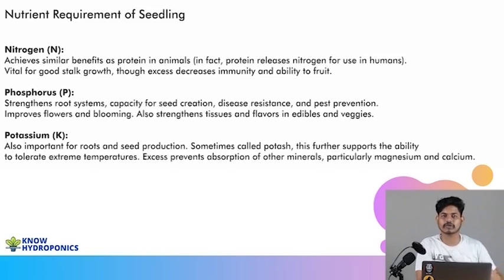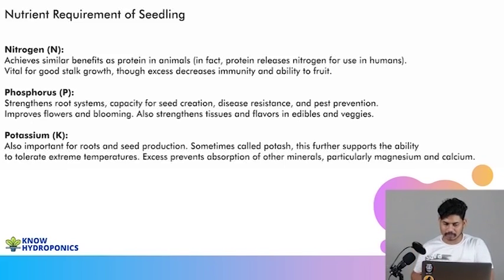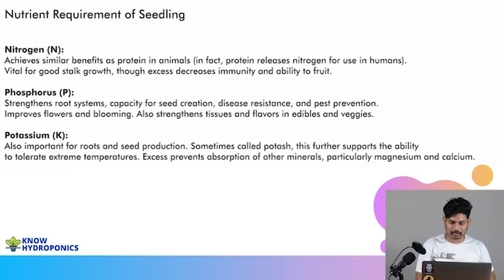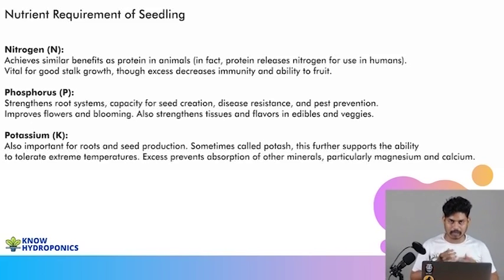When we use NPK 19-19-19, we make sure phosphorus is at the same quantity as nitrogen and potassium. Generally, phosphorus increases the root system, increases disease resistance, improves the flowering and blooming, and gives strength to the tissues and flavors in plant production. This is the importance of phosphorus in the system.